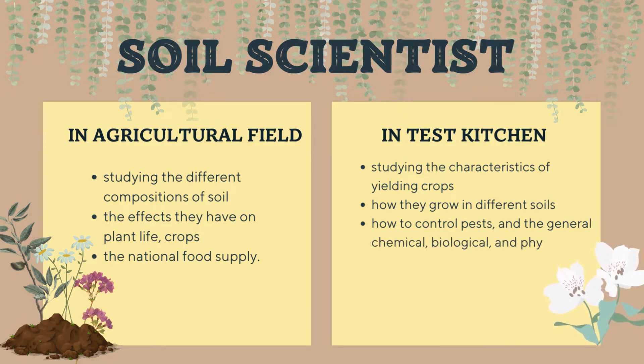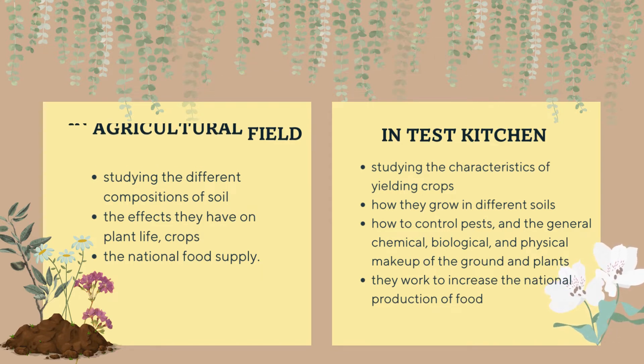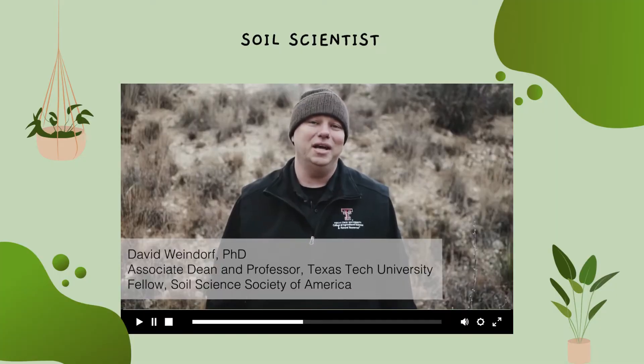Soil scientists who work in test kitchens study the characteristics of yielding crops, how they grow in different soils, how to control pests, and the general chemical, biological, and physical makeup of the ground and plants. They work to increase the national production of food as the need and population...